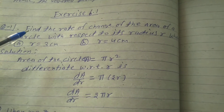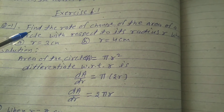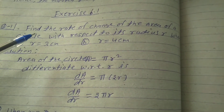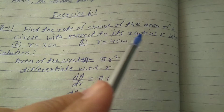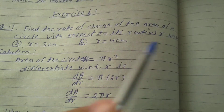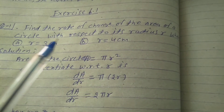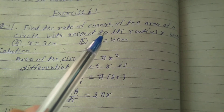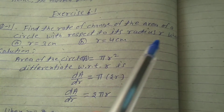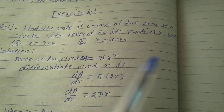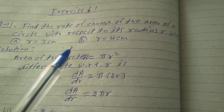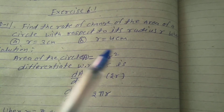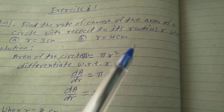I explain the one question. Find the rate of change of area of a circle with respect to its radius r. When (a) r is equal to 3 cm, (b) r is equal to 4 cm.